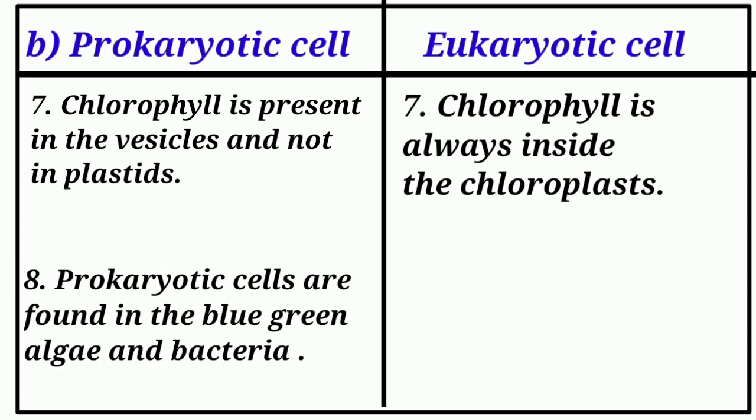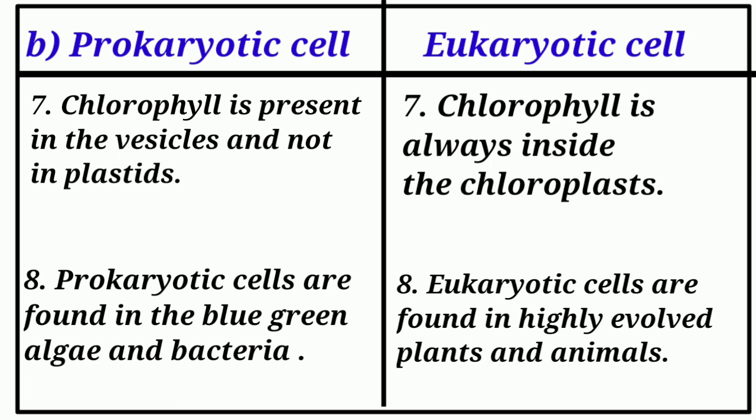Prokaryotic cells are found in blue-green algae and bacteria. Eukaryotic cells are found in highly evolved plants and animals.